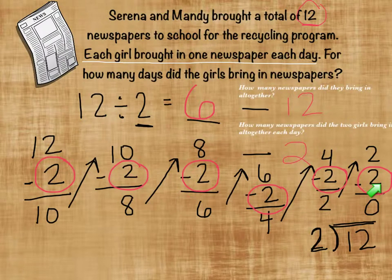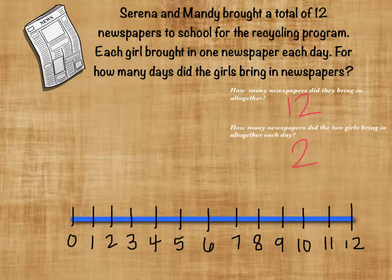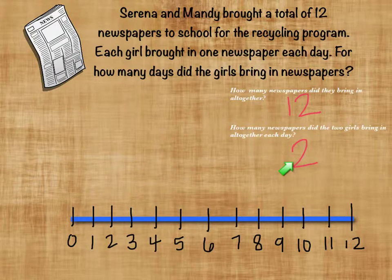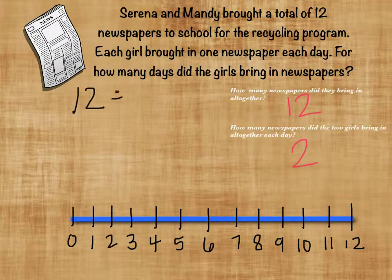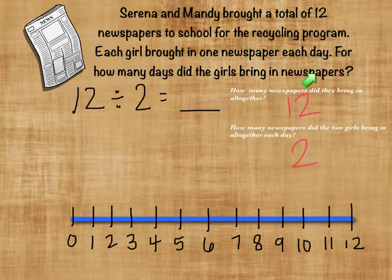That is one way to solve this problem. Let's look at another way — the number line. We still have the same important numbers: 12 total newspapers, and 2 newspapers per day. So we have 12 divided by 2. With a number line, remember, when we're subtracting we go backwards. So we're going to start with 12, and we'll jump back by 2 each time — the size of each jump is 2, because that's how many newspapers they brought in.